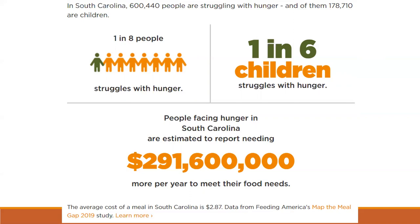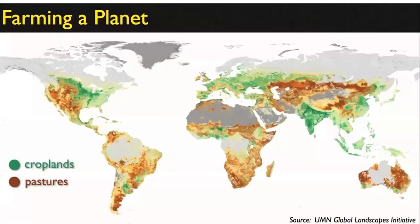Hunger is a huge challenge, and I begin with this because land system change is ultimately about this issue: how do we feed the world? As we go through these slides, you're going to see that most of our land system change is land being converted for agriculture. The question is ultimately whether we are doing this in the best way. There are certainly environmental and social impacts, and it's quite a complex question with no simple one-sided answer.